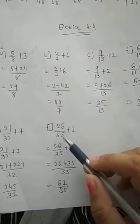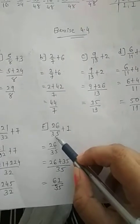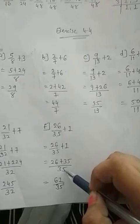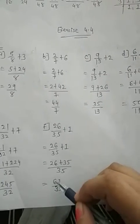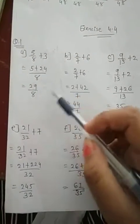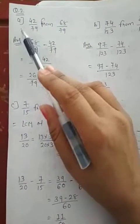F. 26 divided by 35 plus 1. So 26 plus 35 times 1, which is 35, whole divided by 35. So 35 plus 26, 61 divided by 35. So students, question number 1 is completed.